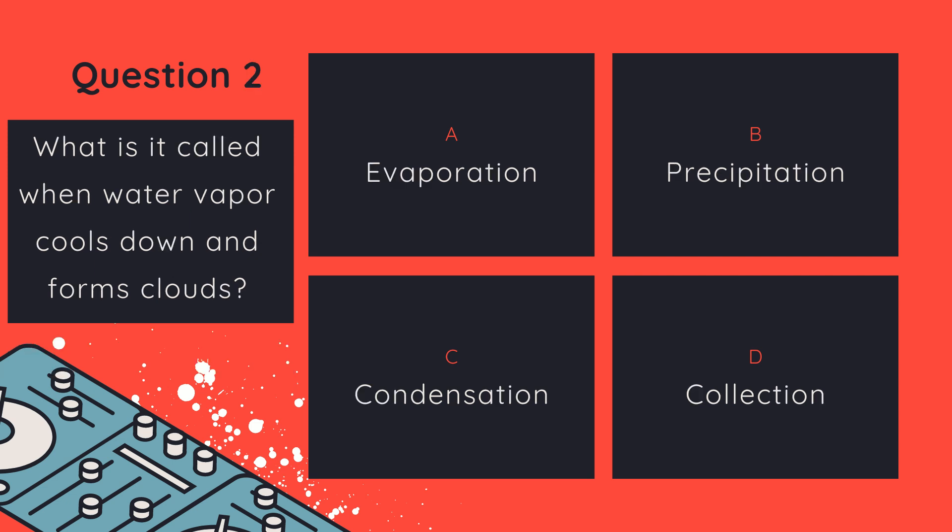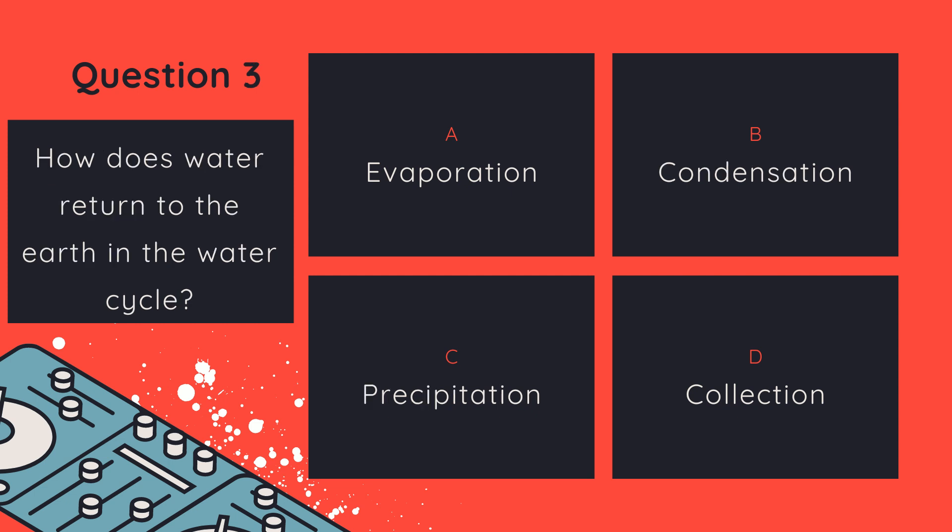Question number two: What is it called when water vapor cools down and forms clouds? A. Evaporation. B. Precipitation. C. Condensation. D. Collection. Question number three: How does water return to the Earth in the water cycle? A. Evaporation. B. Condensation. C. Precipitation. D. Collection.